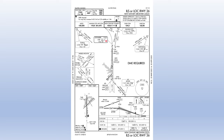At some airports, there's a localizer going one direction on a runway and another going the other direction, and usually only one is active at a time — the tower flips a switch depending on which is needed. They usually have different identifiers, so you can check the digital ID or listen to the Morse code. I've actually had it happen a few times in the real world where I heard the wrong identifier, called approach control, and they confirmed the tower had the wrong one on and switched it around.